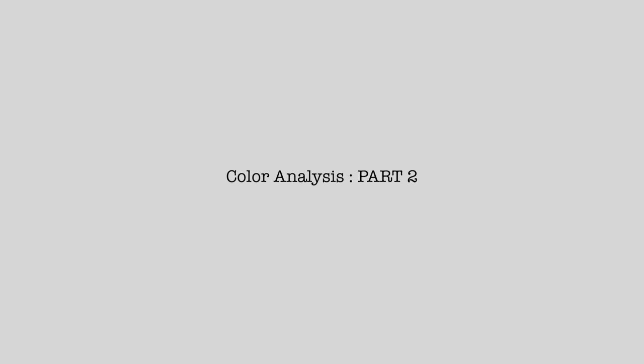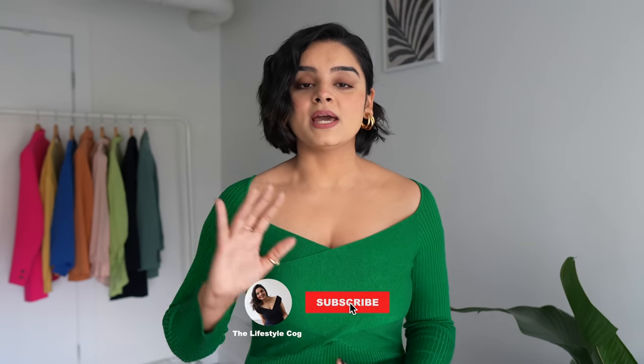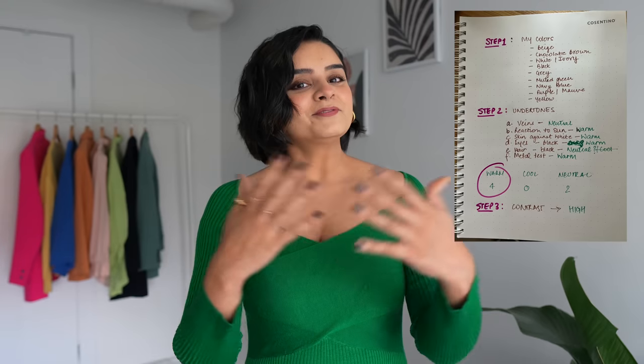Let's see if we can figure out our color season in part two of this color analysis series. In part one, we discussed some basic terms and how this 12 color season wheel is formed, after which we completed three steps. Step one was to analyze your wardrobe and separate the colors that make you feel happy and confident. Step two was finding your undertones, where we completed another six steps, A to F. And step three was all about your contrast.